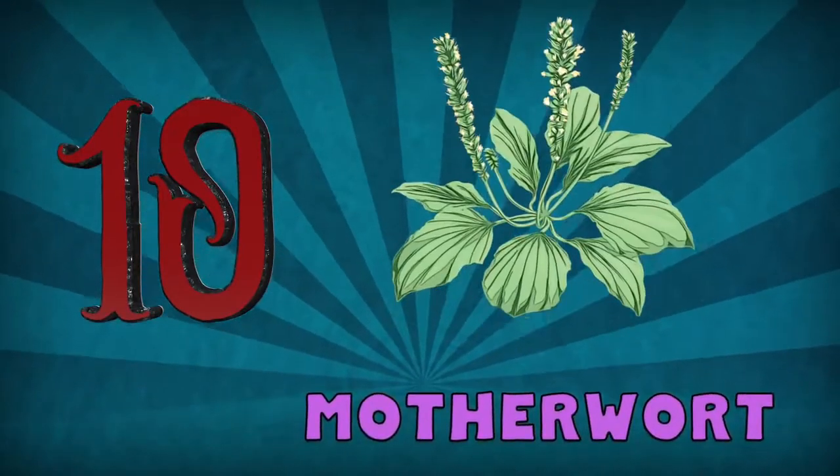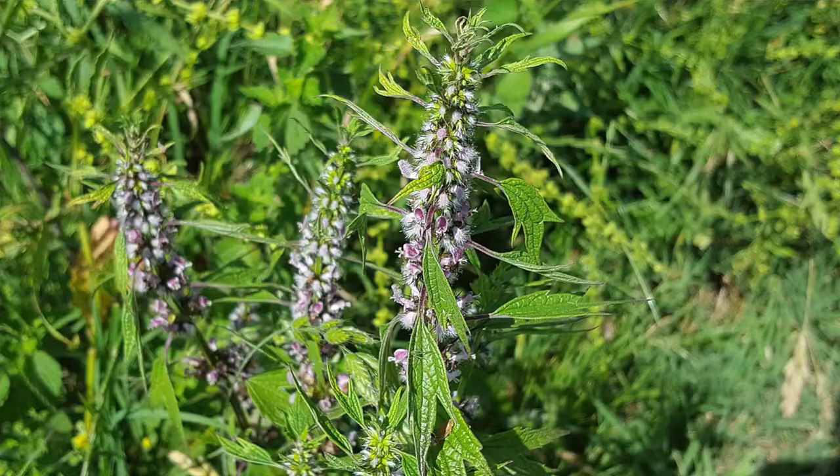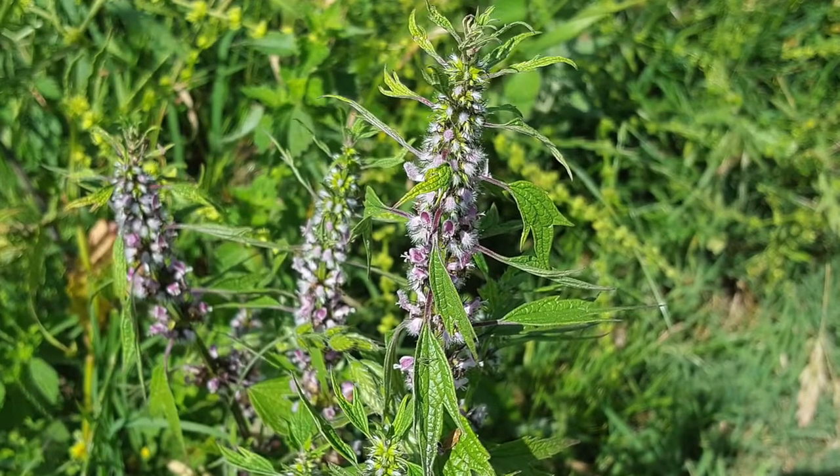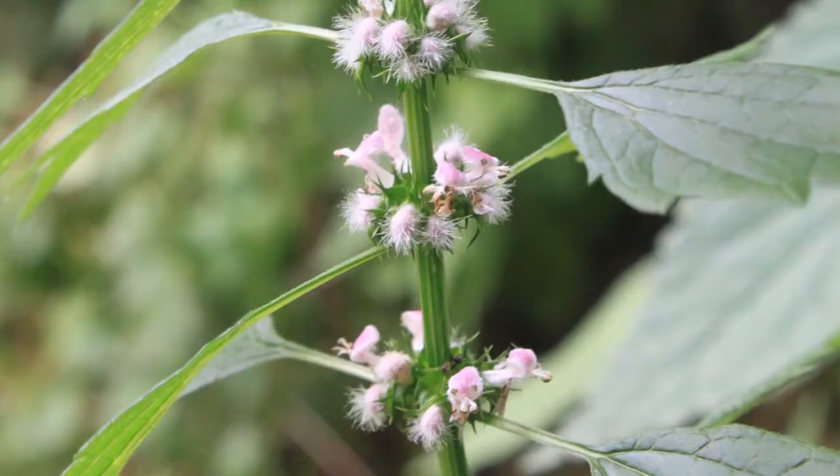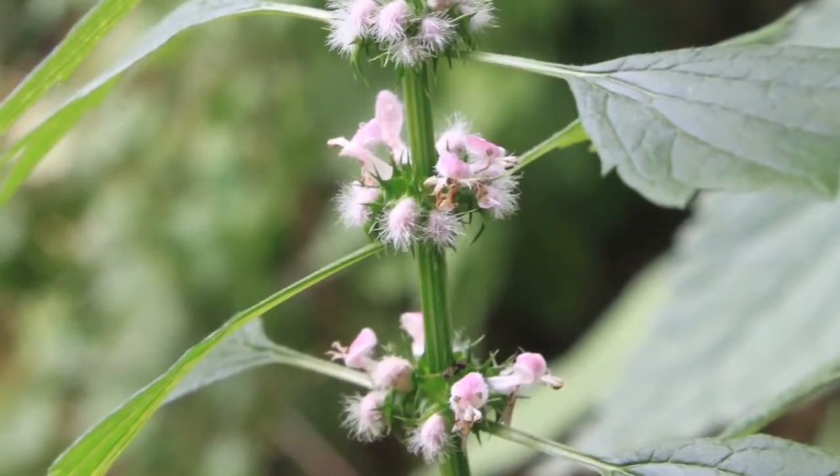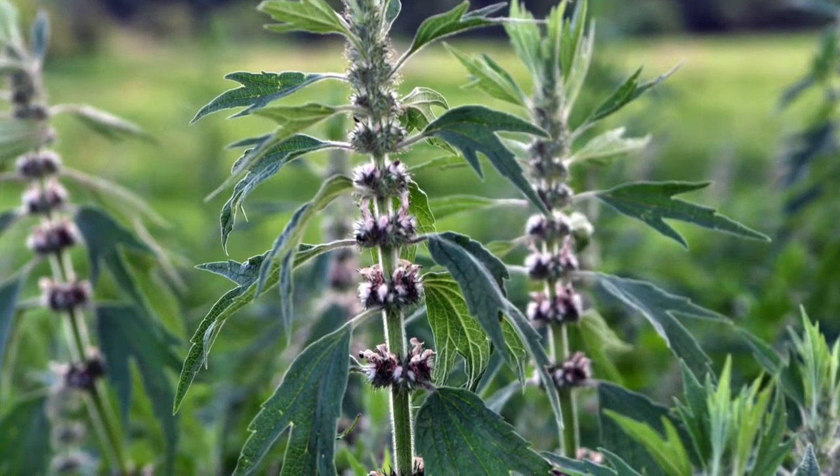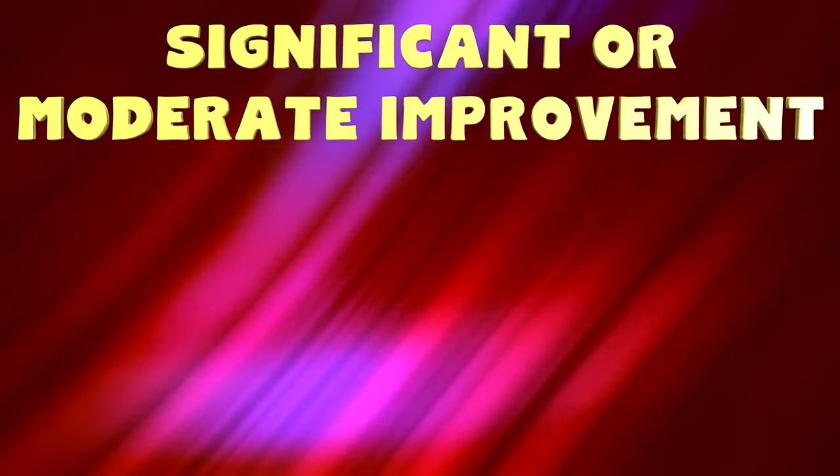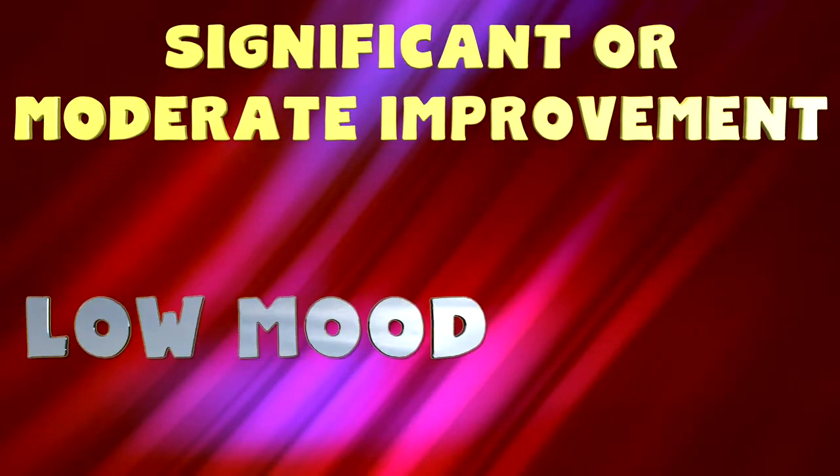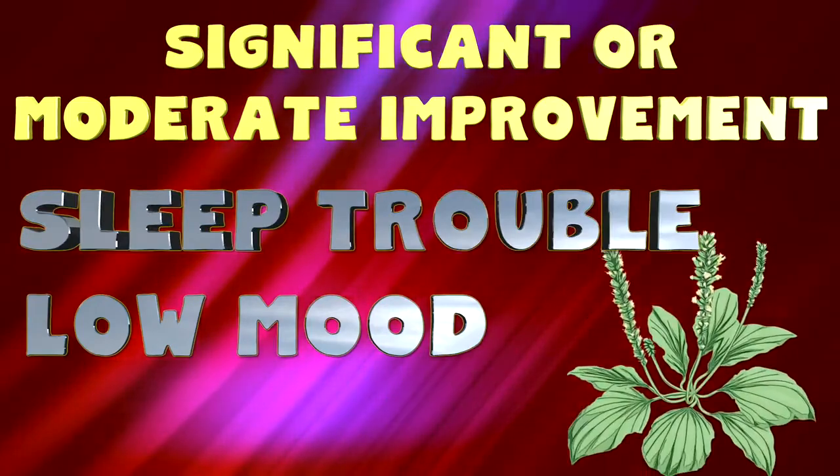Number 10, Motherwort. Motherwort is considered the best herb to help people who get agitated and irritable fall asleep, as it is very efficient at balancing blood pressure and racing heart syndrome. This member of the mint family affects your dopamine levels and can help reduce thyroid activity. So if you have any thyroid problems, you're going to want to be careful when taking Motherwort. Russian researchers found that 80% of subjects with high blood pressure or sleep problems saw significant or moderate improvement in a low mood and related sleep trouble when they took Motherwort.